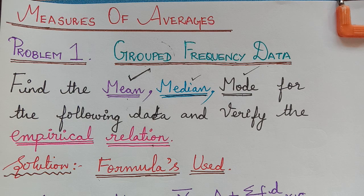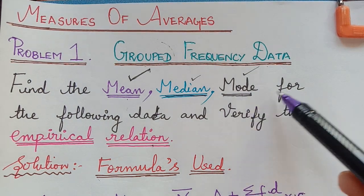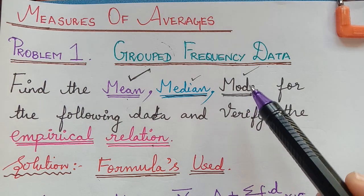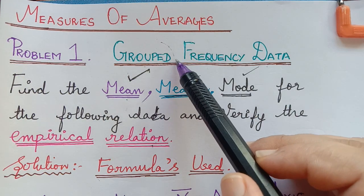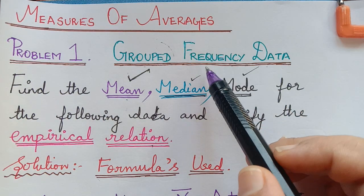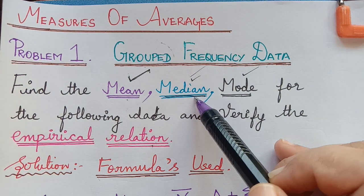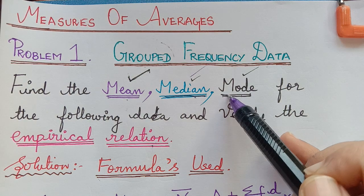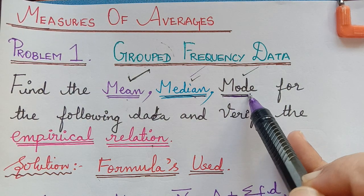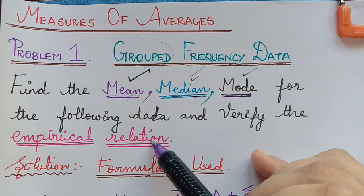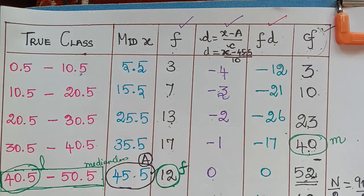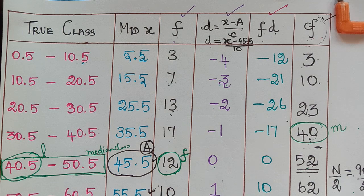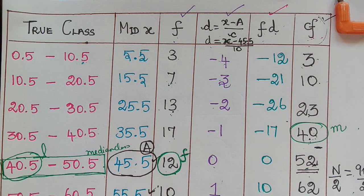Dear students, this is a continuation of our previous lectures. This is part 3, where we will be finding the mode and verifying the empirical relation for the given data. In part 1 we found the mean, and in part 2 we found the median. Now using the same table we will also find the mode.